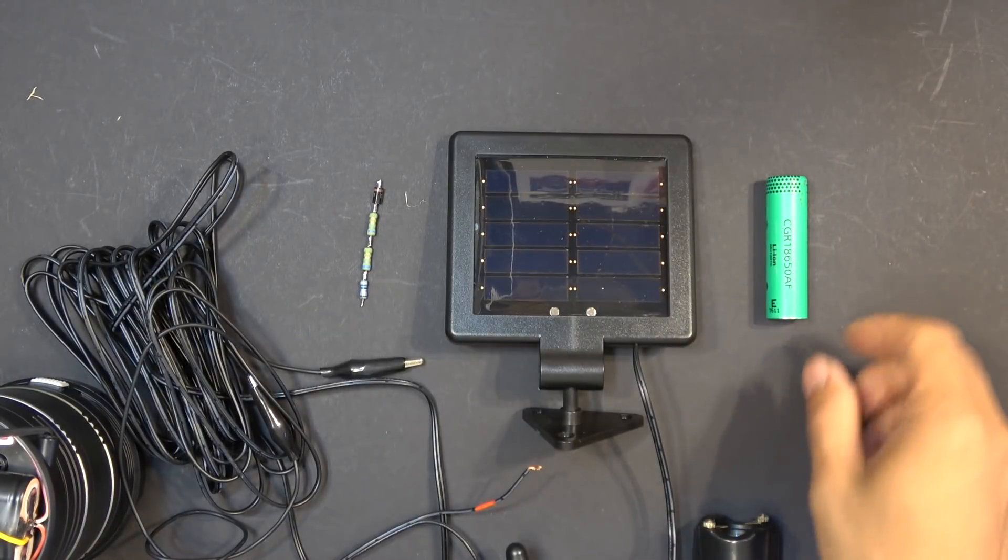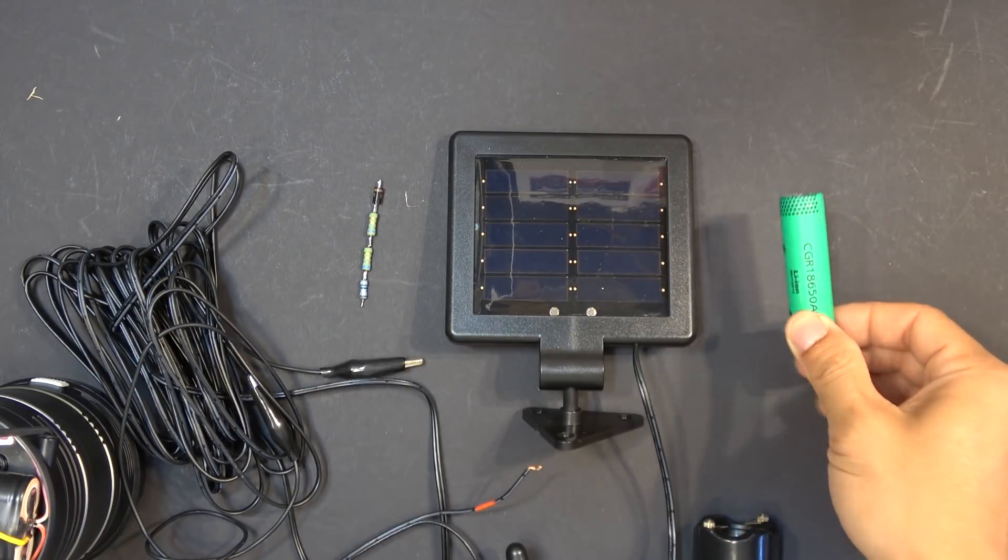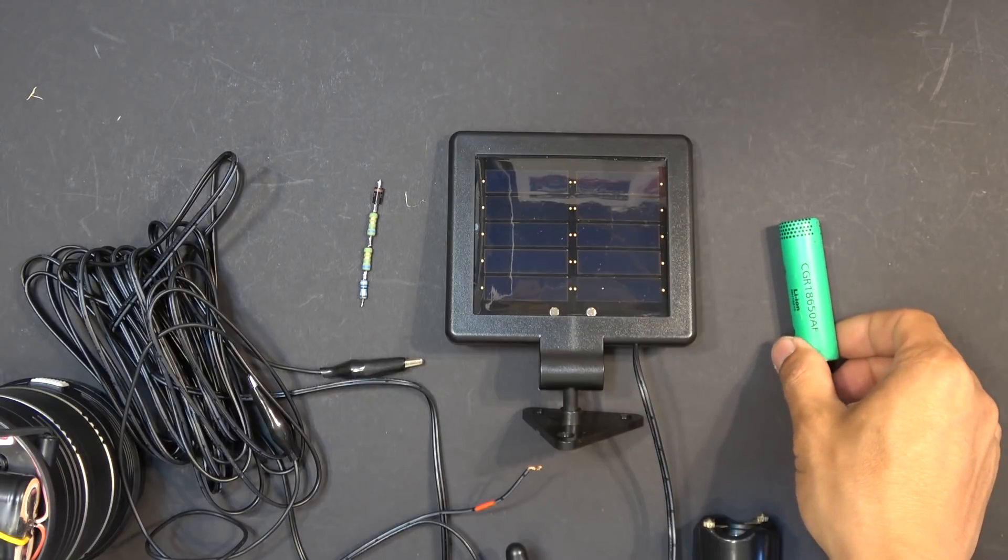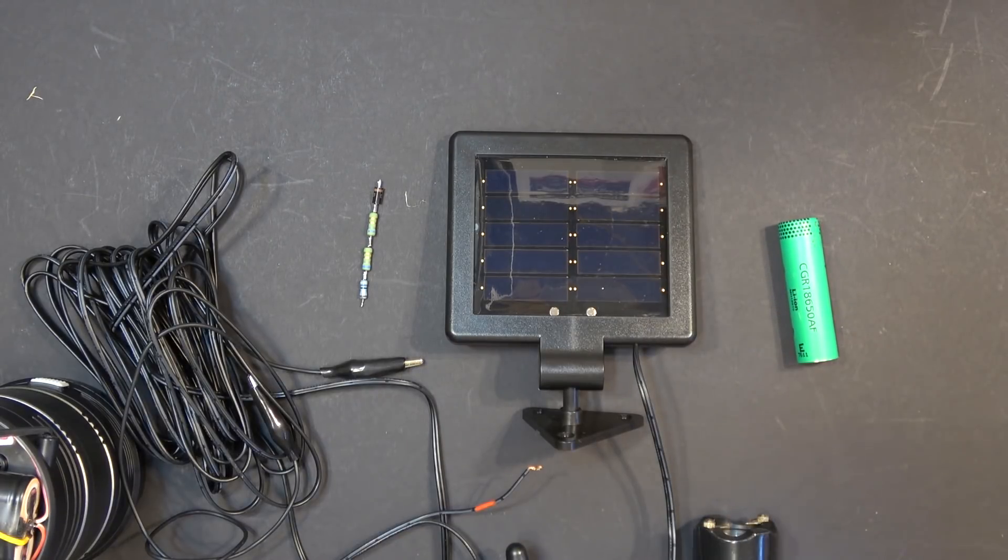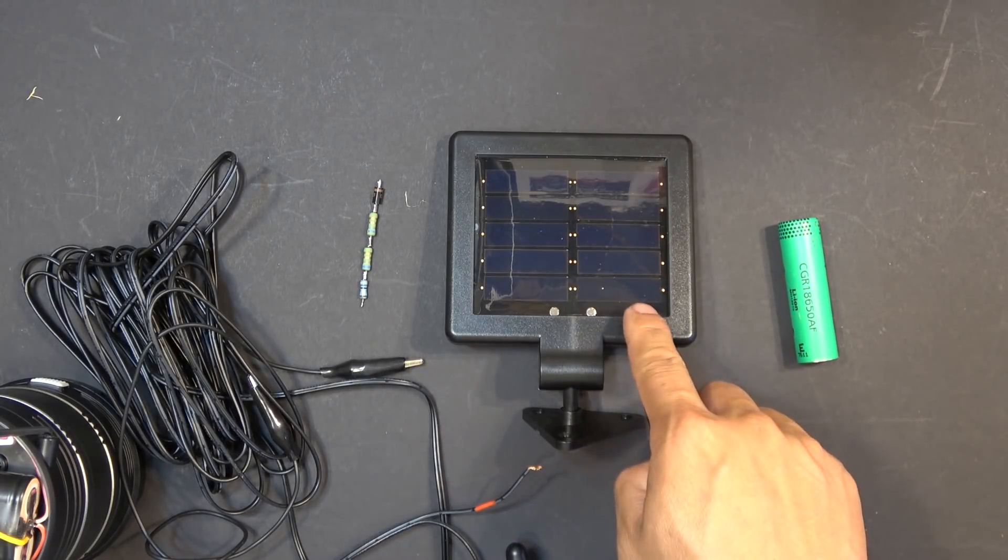Today we'll show you how to charge an 18650 cell or any single 1S lithium-ion battery pack directly using a 5 volt solar panel.